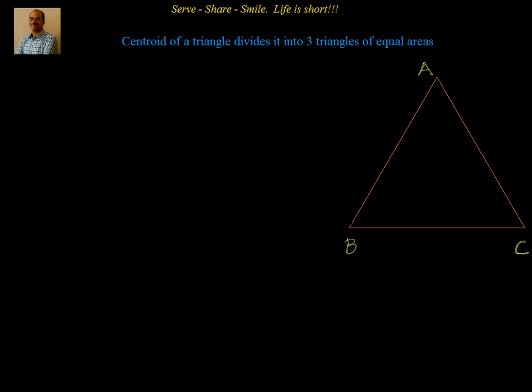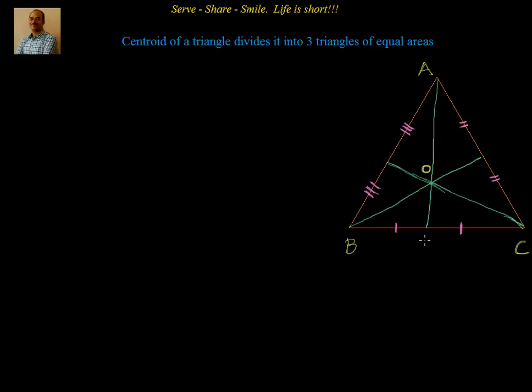Now what is centroid? Centroid is the point of intersection of medians. So let's draw the medians for triangle ABC. We have drawn the medians — let us name them. AD is one median, drawn from A onto BC. Then we have another median BE, and the other median is CF. The point of intersection of the medians is the centroid. Generally we call it G, but for now we will take it as O.